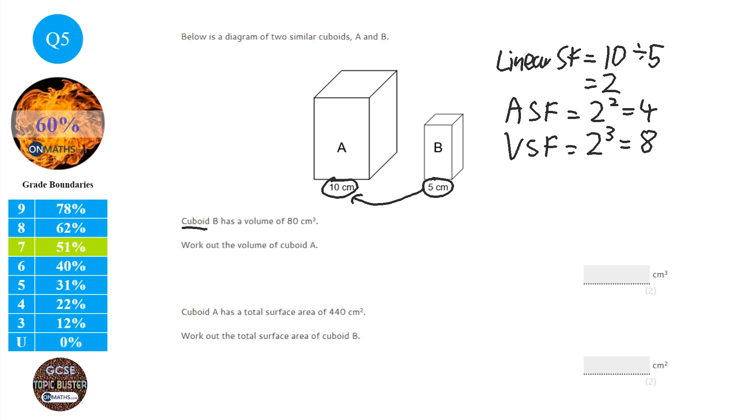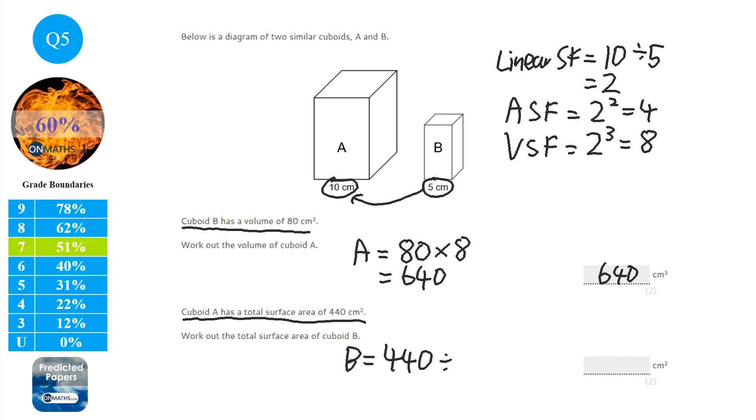So with this first question it says cuboid B has the volume of 80. So if B has 80 the volume of A is going to be 80 times the volume scale factor which is 8. So that's going to be 64 with a 0 so 640 and it's that simple. This one here it says cuboid A has a total surface area of 440. So work out the surface area for B. Now this is surface area this time. So it's going to be 440. Now because we're going from bigger to smaller we're going to divide by the scale factor. And it's the area scale factor we need which is going to be the 4. So we do 440 divided by 4 which is hopefully 110. And it's that simple.